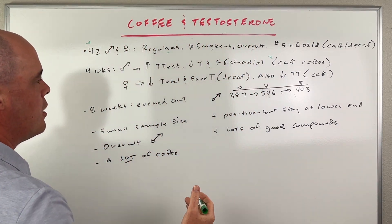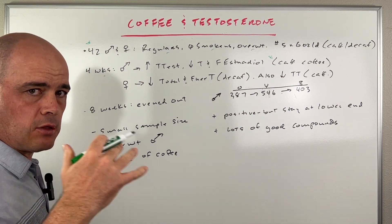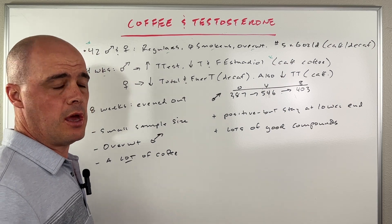So for example, free testosterone in the men in the caffeinated group went from 387 at the start of the study to 546, which is a big jump at week four.